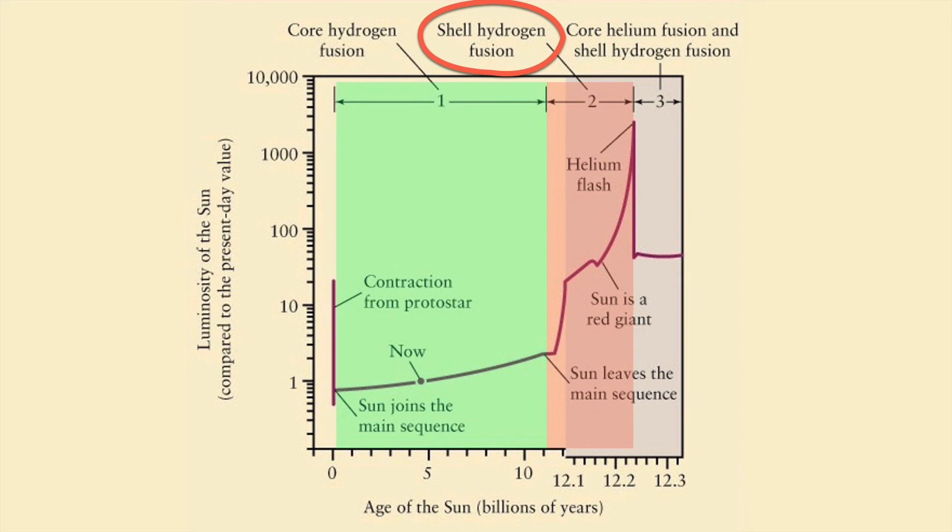Once the helium in the core ignites with the helium flash, which can be over a thousand times more luminous than the sun is today, and the triple alpha process kicks in, the luminosity drops a little bit, but it's still around a hundred times more luminous than today's sun.